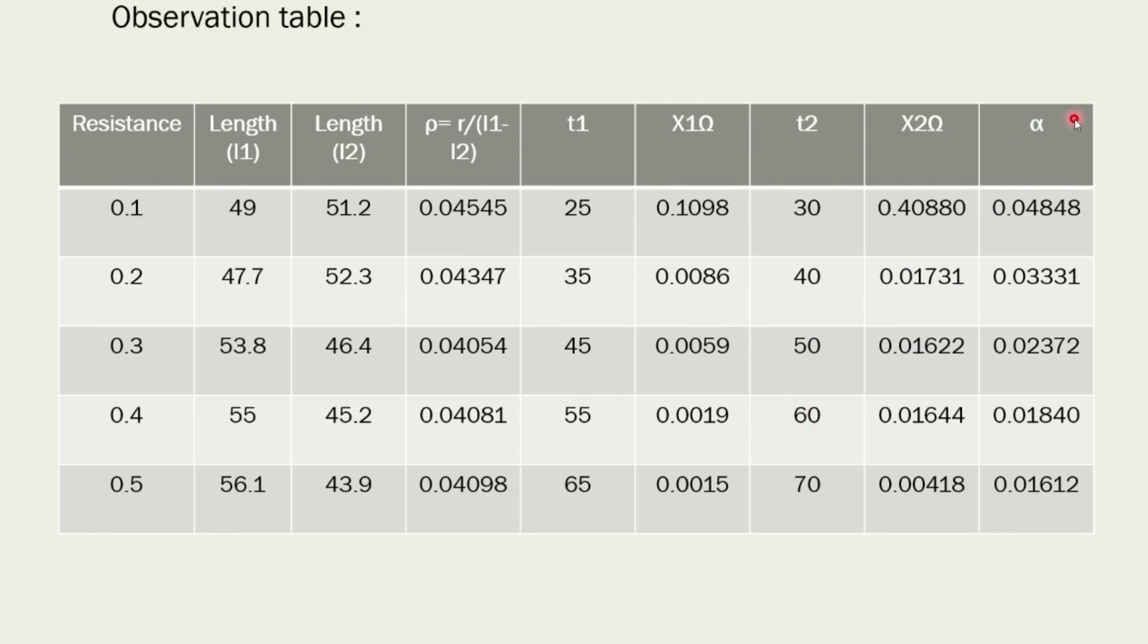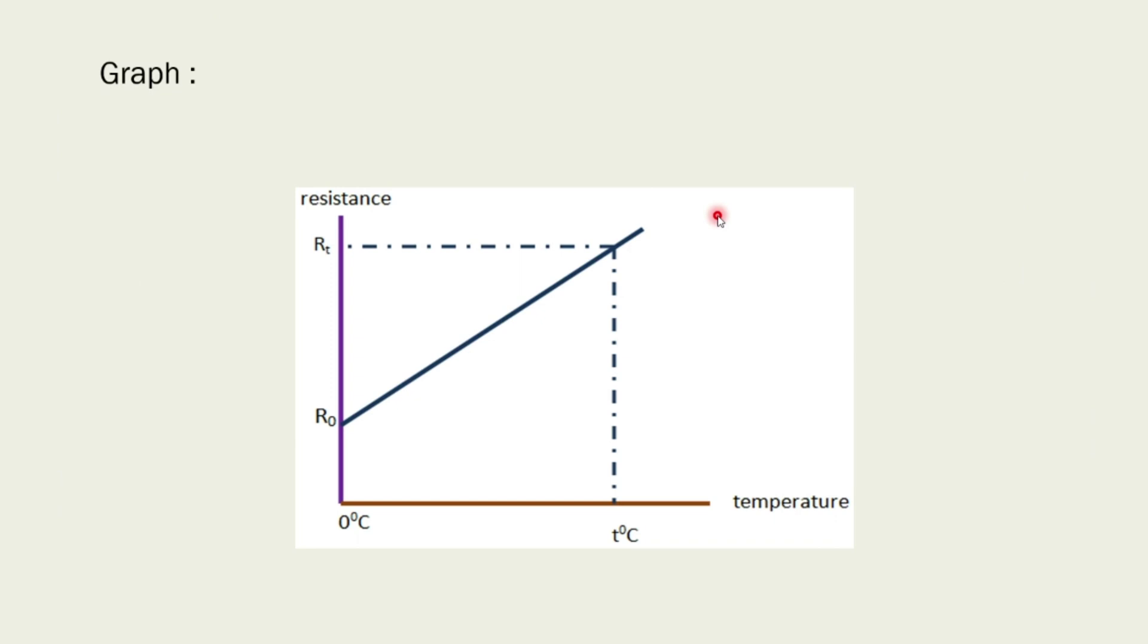The resistance factor per degree Celsius of the temperature change is called the temperature coefficient of resistance. This factor is represented by the Greek lowercase letter alpha. And here we calculate temperature coefficient of resistance by using formula alpha equals X2 minus X1 by X1 T2 minus X1 T1. And here is the graph of this practical.